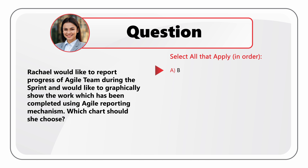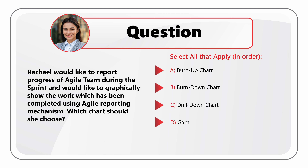Choice A: Burn-up chart. Choice B: Burn-down chart. Choice C: Drill-down chart. Choice D: Gantt chart. And last but not least, Choice E: Bar chart.